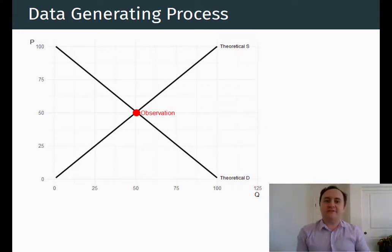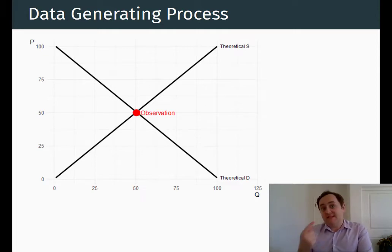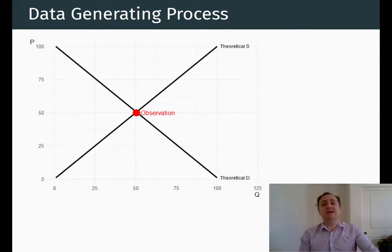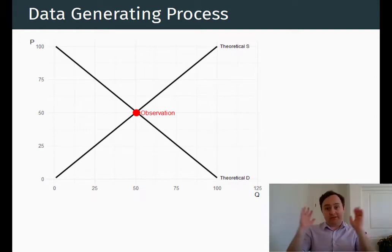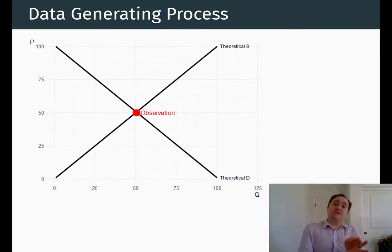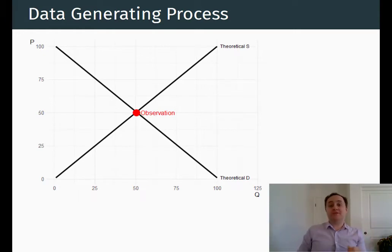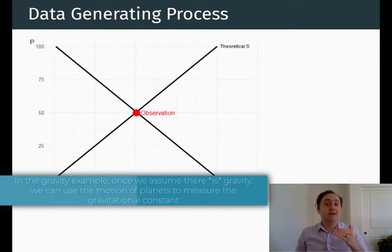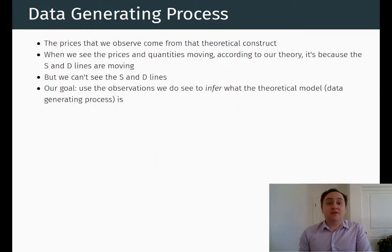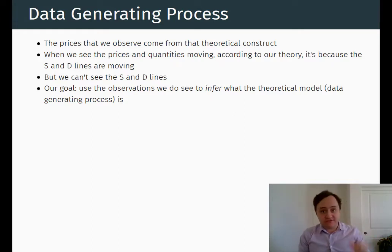We can map this out. Here's a standard graph of supply and demand — you can see the theoretical supply line sloping up and theoretical demand sloping down. What we get from this is a single observation: the only thing that we actually see is that red dot. We see that the price is 50 and 50 units were sold. The theoretical supply and demand curves are invisible to us; we are theorizing that they are there. Our goal as econometricians is to take those observations — just the red dots — and figure out what the black lines look like. We're trying to use our observations, despite the fact that we can't run an experiment, to learn about the data generating process: use the prices and quantities to learn what supply and demand look like.